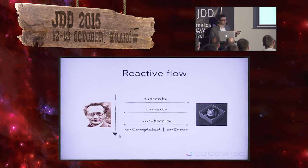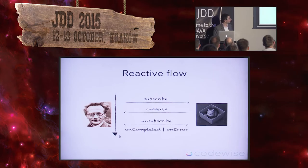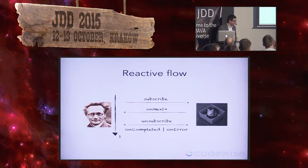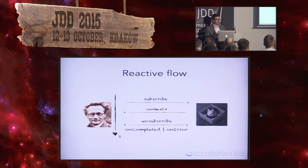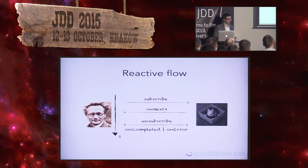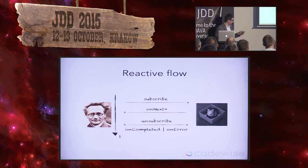The first terminal action is unsubscribe — we changed our mind and don't want any more notifications. This is probably more used in UI technologies like Android: when you create some views and get data from them, if the application is stopped or something changes inside, you unsubscribe. It generally doesn't happen a lot in backend processing. But on the other hand, onError and onComplete happen more often.